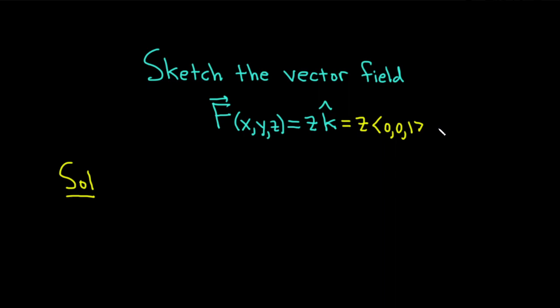And z is a number, so if we distribute this through, we basically get z times zero, which is zero, z times zero, which is zero, and then z times one, which is z.